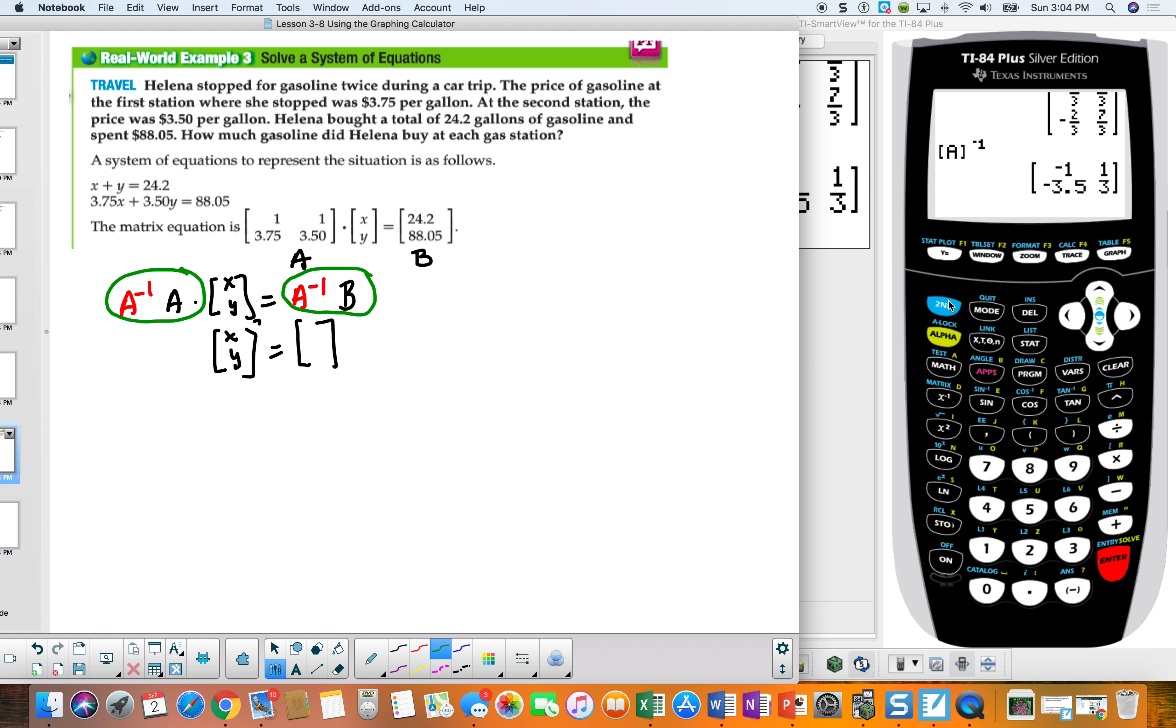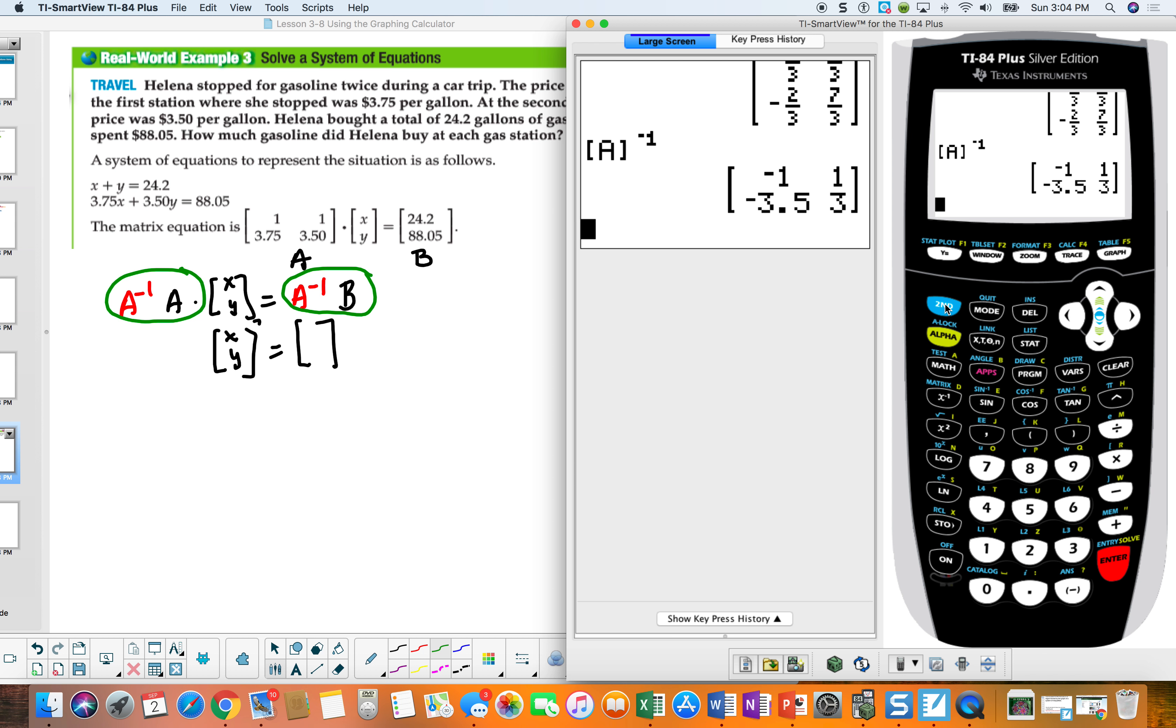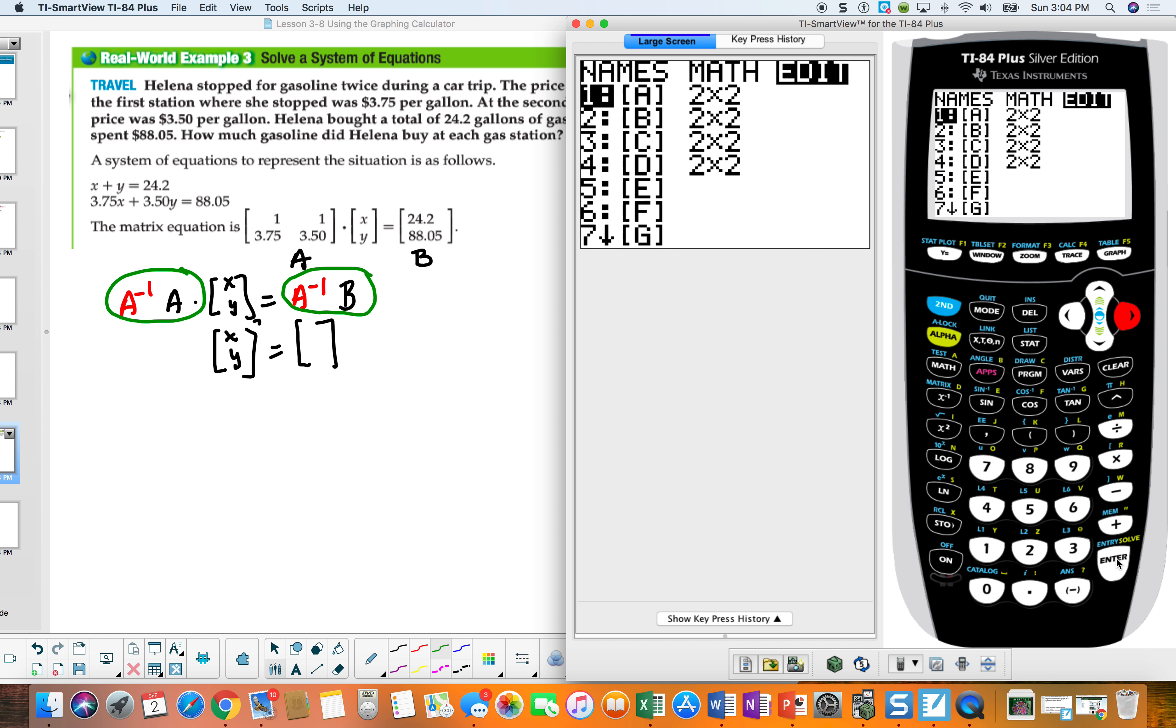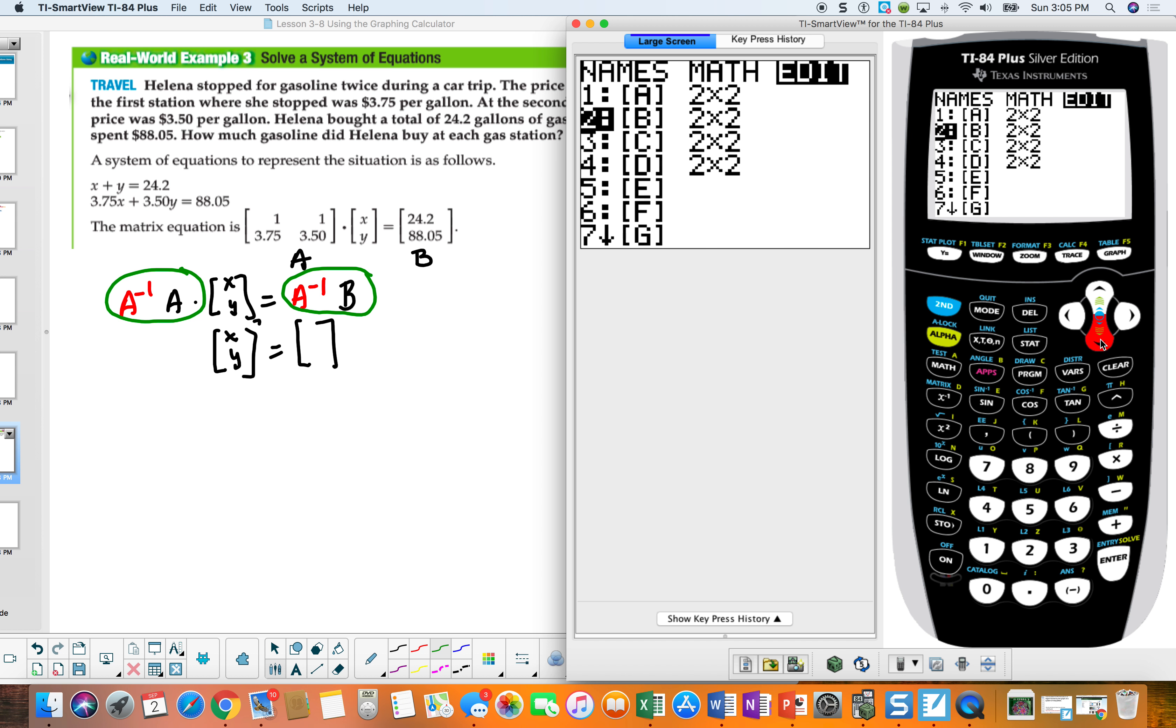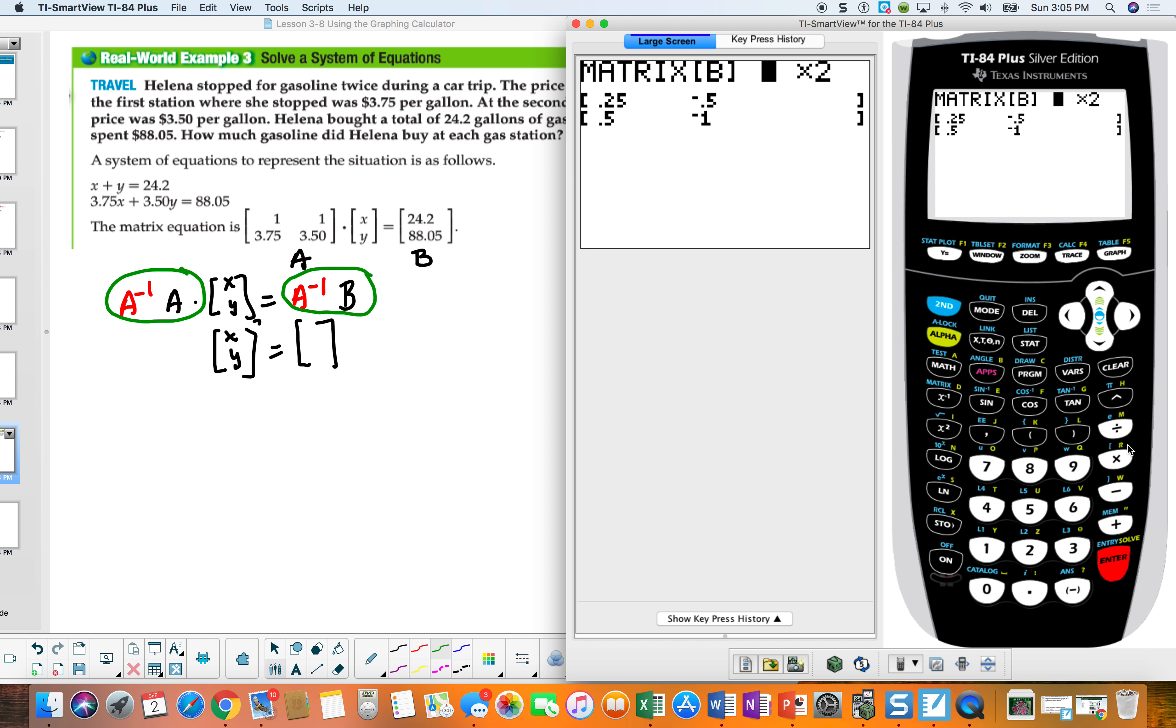All right, so let's go ahead and put in our matrix A. So the second matrix, go over to Edit, Enter, and that's going to be 1, Enter, 1, and then 3.75, Enter, 3.5, Enter. Okay, so I've got that matrix, and then I want to do second matrix, and I want to go to the B, Enter. And this is, I want 2 rows and 1 column. And this will be 24.2, Enter, and 88.05, Enter.